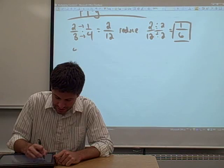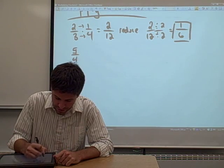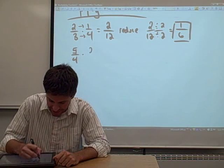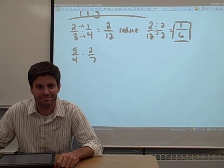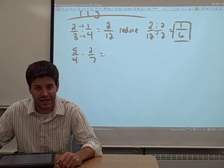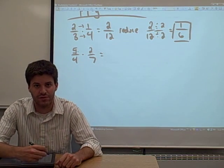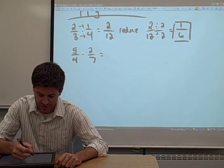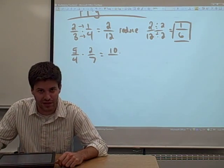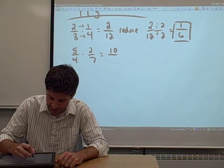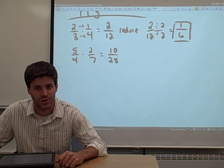Let's try five fourths times two sevenths. What we do again is we multiply straight across the numerator and straight across the denominator. Multiply five times two to get our numerator — that's ten. Multiply four times seven to get our denominator — that's twenty-eight.